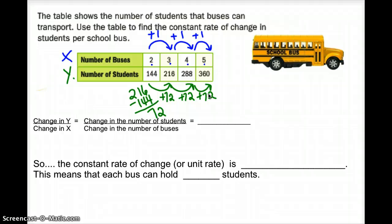With that information, we're going to use this formula, change in y over the change in x. Well, the change in y, we see that it increases 72 students. And we see that the change in x, or the change in the number of buses, increases by 1 bus. This rate can be simplified to 72 students per bus.